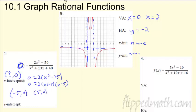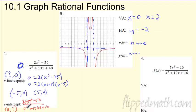For the y-intercept, same idea except you want y when x is zero. Wherever there's an x, replace it with zero. So the numerator becomes two times zero squared minus fifty, and the denominator becomes zero squared plus thirteen times zero plus forty. All your zeros drop out, leaving negative fifty over forty. Reduce that and you get negative five-fourths. Write it as a point: zero comma negative five-fourths. A decimal is fine too.